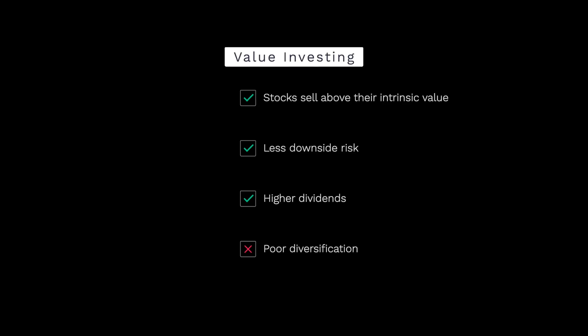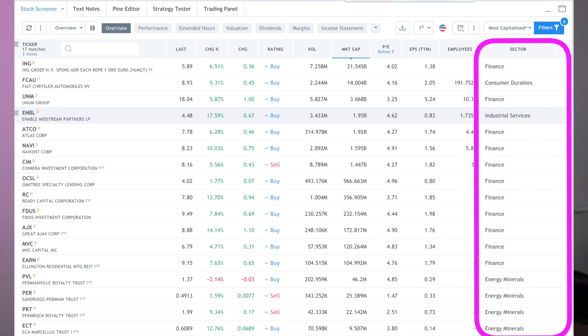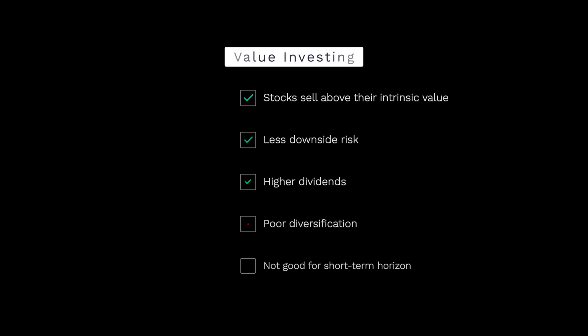Now for the cons. Con number one: poor diversification. Value investing typically leans heavily toward certain sectors, such as finance, which have stronger fundamentals than sectors like technology. As you can see from the screener results, most results were in the finance sector, so value investing could leave you with limited diversification. Con number two: patience is required. Value stocks need a long-term investment horizon — potentially decades. So if you're an impatient investor or have a short-term horizon, value investing may not be right for you.